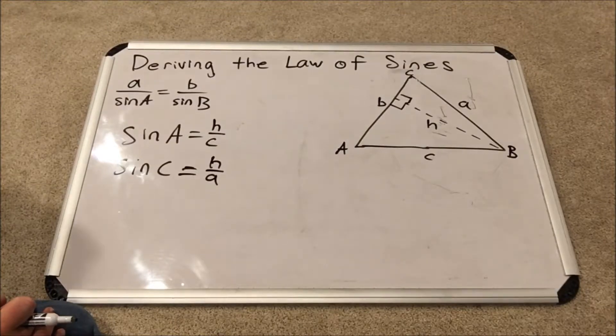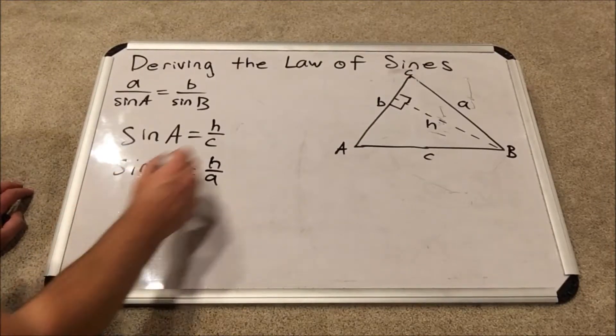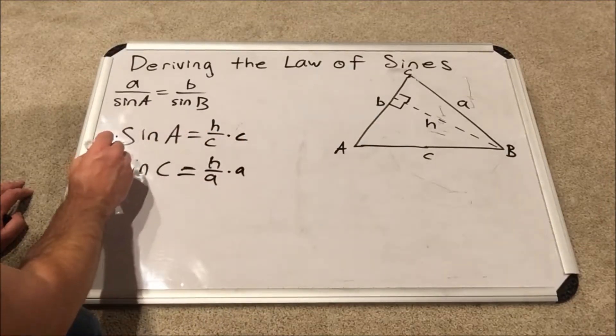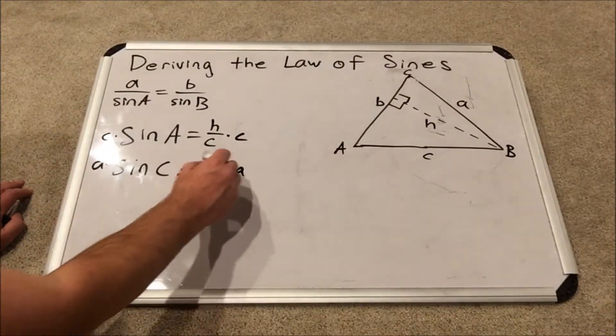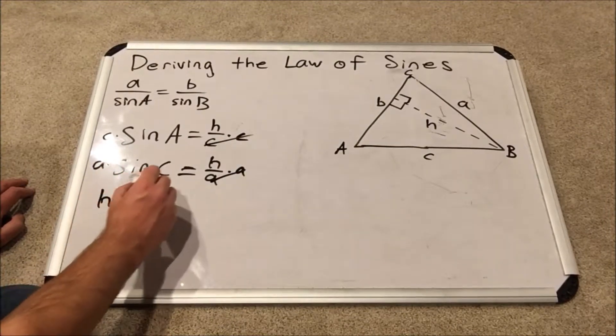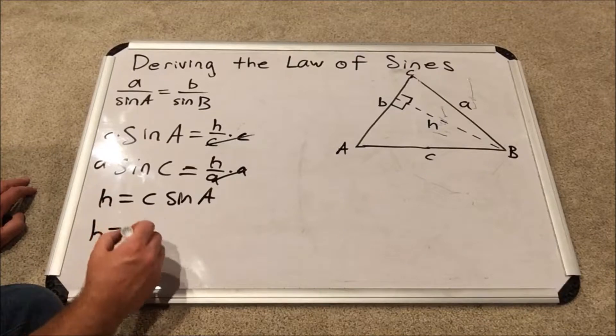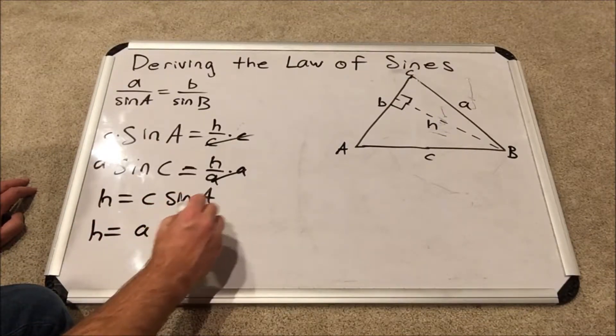In the previous section of this video, we will solve both of these equation fractions for H, which involves multiplying by the denominator of both of those fractions on the right. You see that H equals C sine A, and H also equals A sine C.